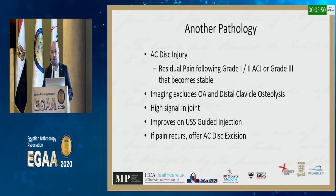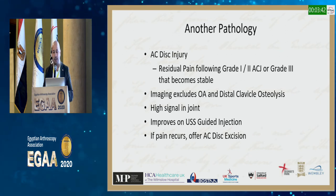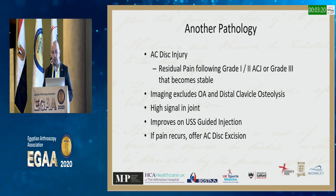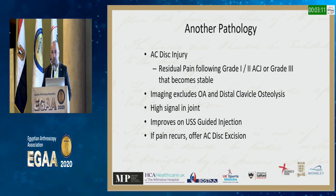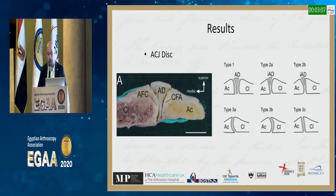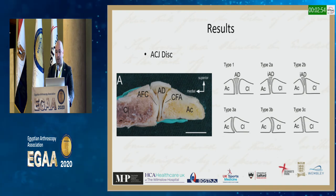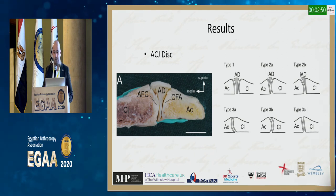To finish, there's another pathology we've become increasingly aware of: injury to the AC joint disc. These are patients with a seemingly grade one or two injury that never really got better, or grade three patients who became stable but had persistent pain. On MRI, with osteoarthritis excluded, there is high signal within the AC disc. In all these cases, pain completely improved on ultrasound-guided steroid and local anesthetic injection. If pain recurred, we went on to excise the AC disc.